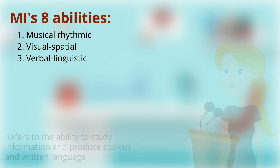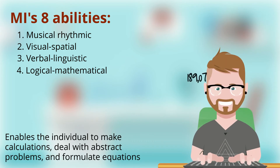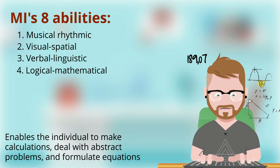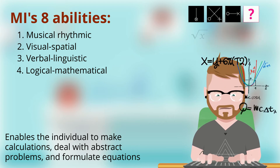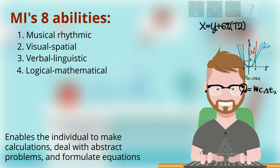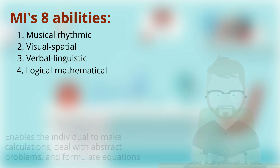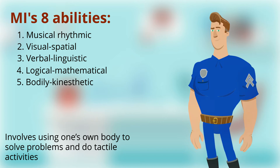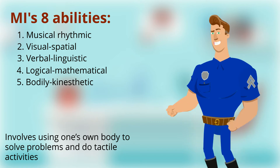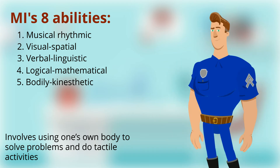The fourth is Logical-Mathematical intelligence, which enables the individual to make calculations, deal with abstract problems, and formulate equations. The fifth is Bodily-Kinesthetic intelligence, which involves using one's own body to solve problems and do tactile activities.